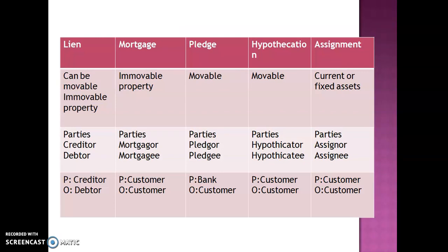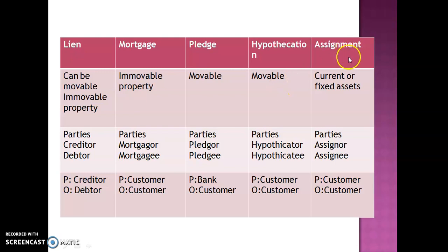Here is a comparison of all the charges. Lien can be on movable or immovable property; mortgage covers immovable property; pledge covers movable assets; hypothecation covers movable assets; and assignment covers current or fixed assets. Parties of lien: creditor and debtor. Parties of mortgage: mortgager and mortgagee. Parties of pledge: pledger and pledgee. Parties of hypothecation: hypothecator and hypothecatee. Parties of assignment: assignor and assignee.